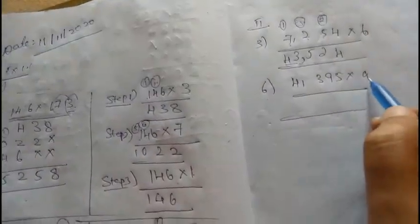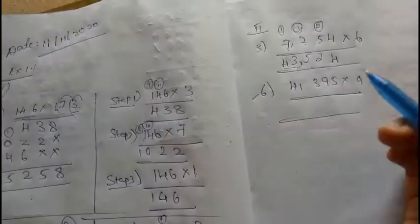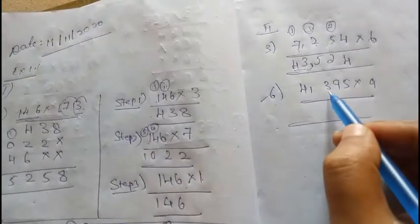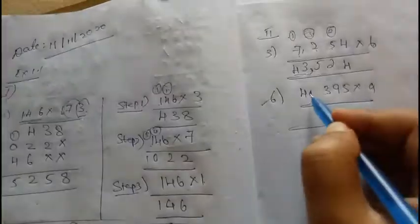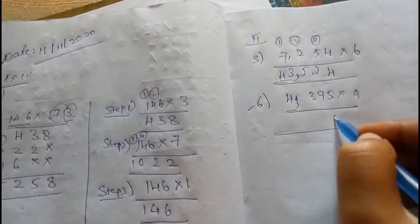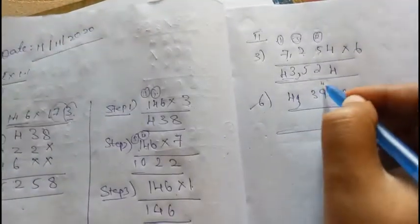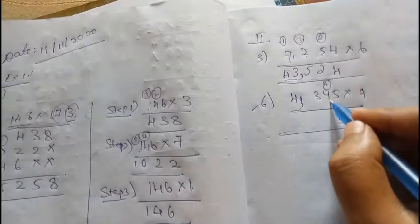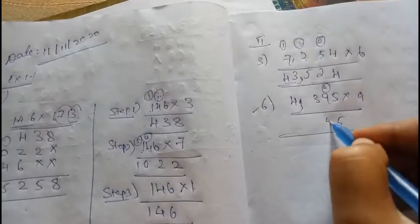Similarly, we need to do this question: 4,395 into 9. 9 times 5 is 45, 4 carry. 9 times 9 is 81, plus 4 is 85, 8 carry.